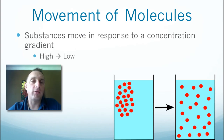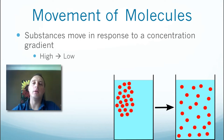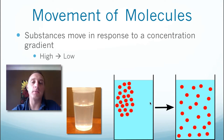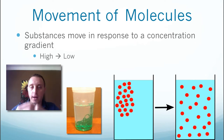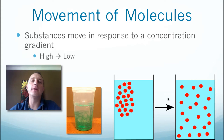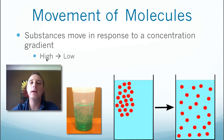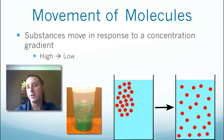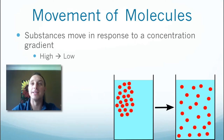When a concentration gradient is set up, what normally happens is something called diffusion, where molecules tend to move from an area of high concentration to an area of low concentration. We can model this by looking at a drop of food coloring into water — it starts as a concentrated drop, then slowly spreads out. Molecules move down the concentration gradient, like going down a hill.